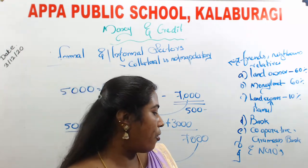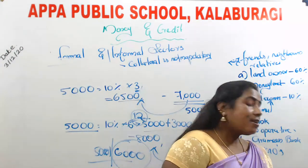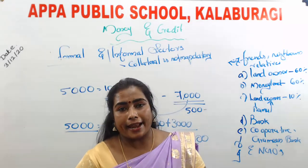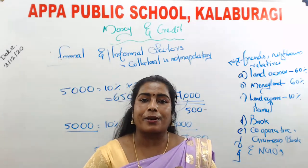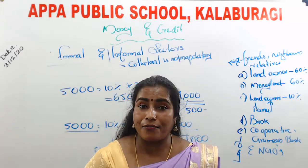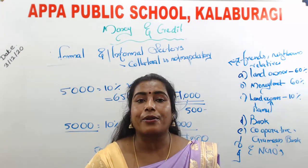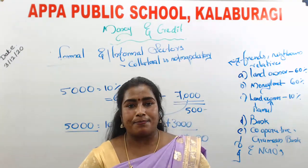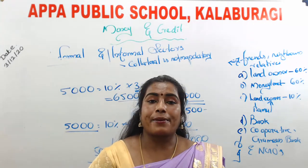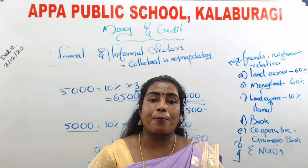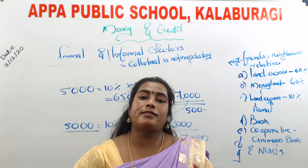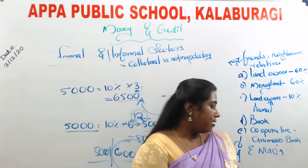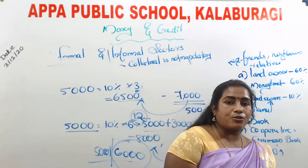So, higher cost of borrowing has two implications: first, a larger part of the borrower's earnings must be repaid, leaving very little income. Second, sometimes borrowers have to pay more than what they originally received. That is the second implication of higher cost of borrowing.